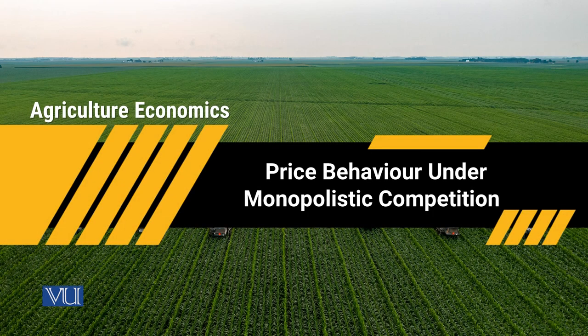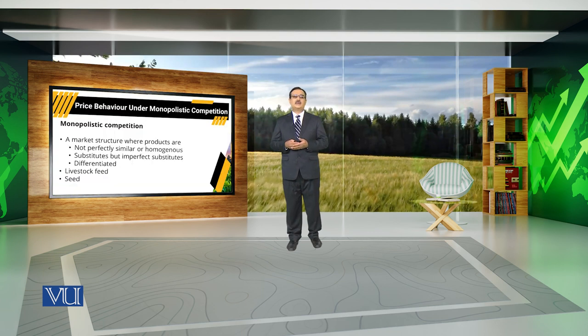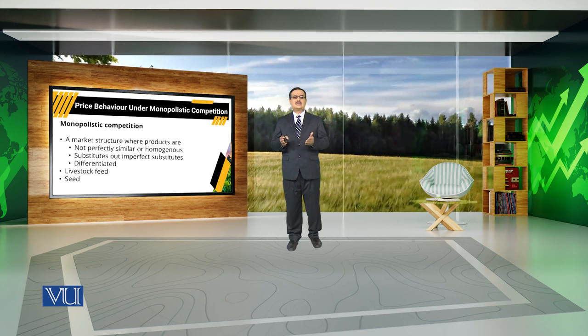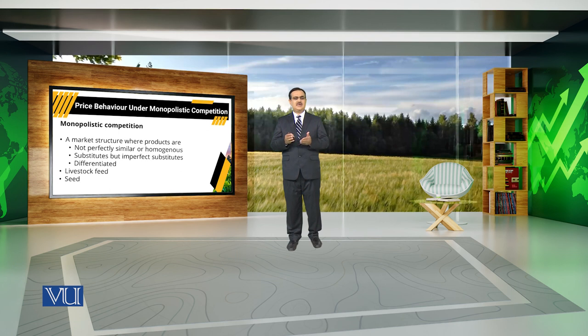Price behavior under monopolistic competition. When we talk about behavior of firms under perfectly competitive market or imperfectly competitive market, the firm's behavior is different depending upon the market structure. When we talk about a firm operating under monopolistic competition, this is a market structure where products are not perfectly similar or homogenous — there is some type of product differentiation being sold in the market.